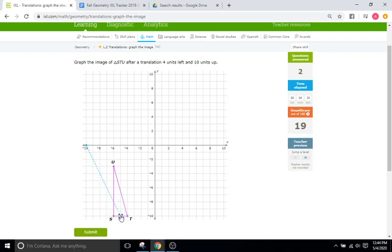We'll go to T and go one two three four and then ten units up. Okay and then we'll go one two three four and ten units up. Which is going to be up here at seven.